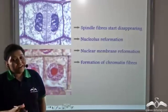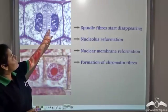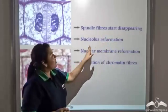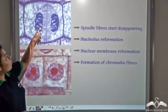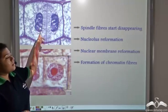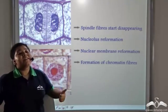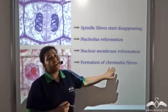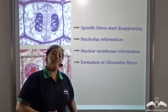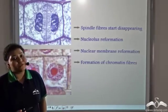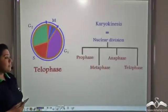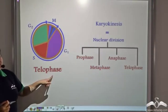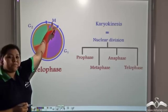After anaphase, the spindle fibers start to disappear, the nucleolus starts to reform, the nuclear membrane reforms once again, and finally there is formation of chromatin fibers from uncoiling of chromosomes. This phase is known as telophase. It is the last phase of the M phase.